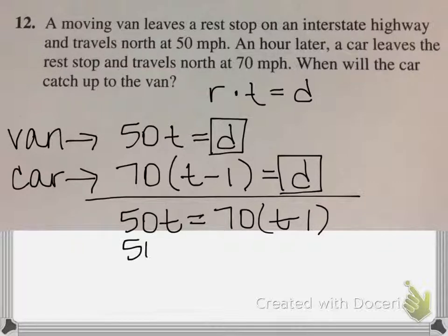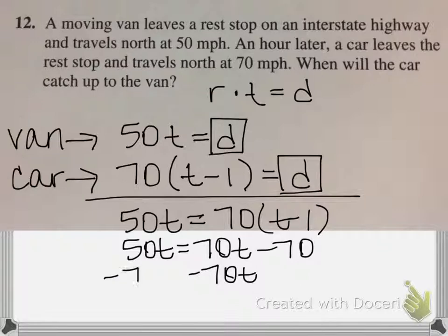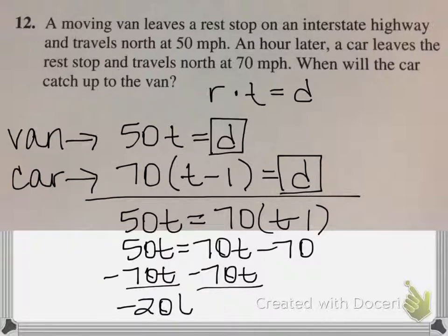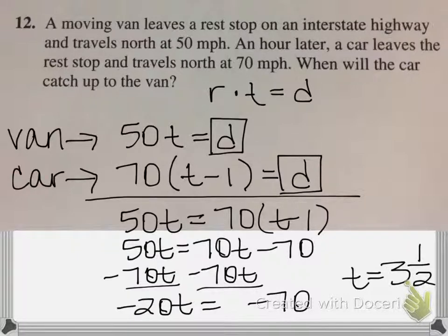So here's our equation that we're going to solve. We have 50t equals 70t, because I have to distribute minus 70. I have to get all my t's on one side, so if I subtract 70t from both sides, that's going to give me a negative 20t equals negative 70, and when I divide both sides by negative 20, I'm going to get 3 and a half. A negative divided by negative is a positive, and 70 divided by 20 is 3 and a half. So when will the car catch up to the van? It will catch up to the van in 3 and a half hours.